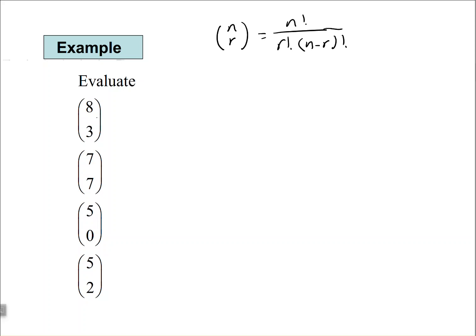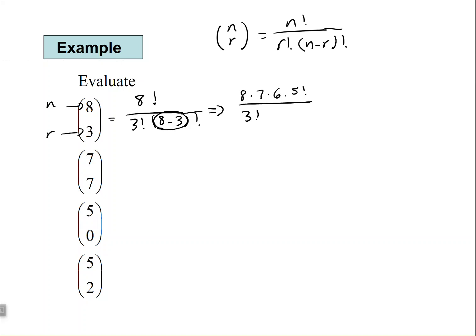To evaluate 8 above 3, n is 8 and r is 3. Filling in our formula, we have 8 factorial over 3 factorial times (8 minus 3) factorial. Since 8 minus 3 is 5, we get 8 factorial over 3 factorial times 5 factorial. Now I'll rewrite 8 factorial as 8 times 7 times 6 times 5 factorial, over 3 factorial times 5 factorial.